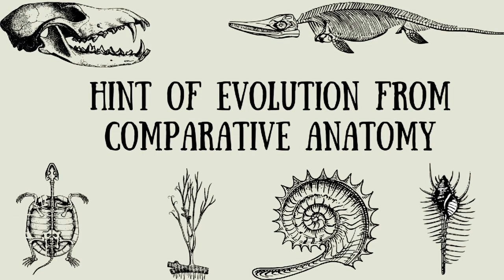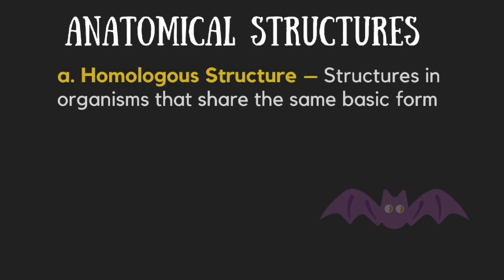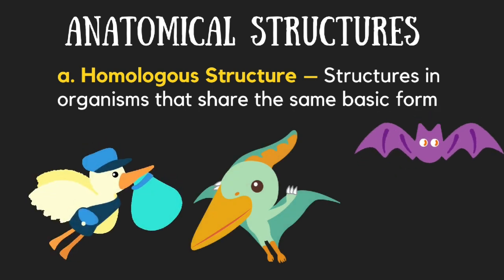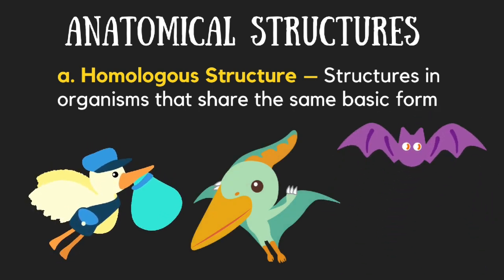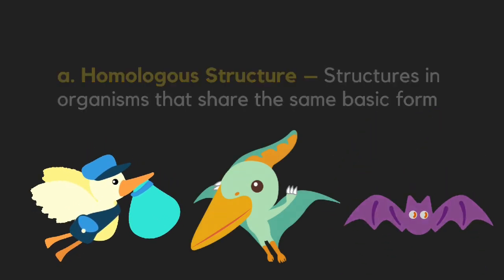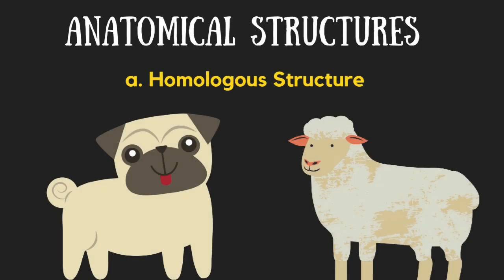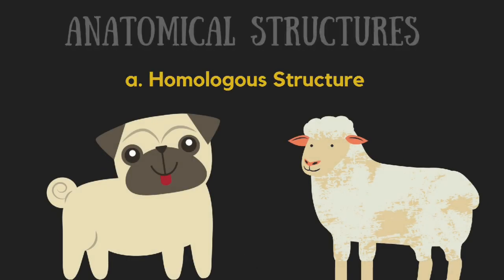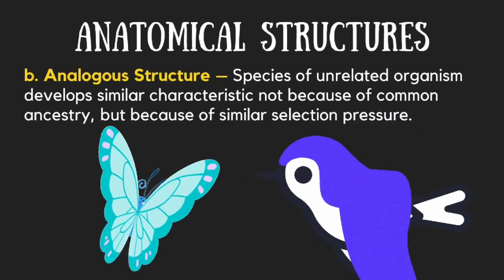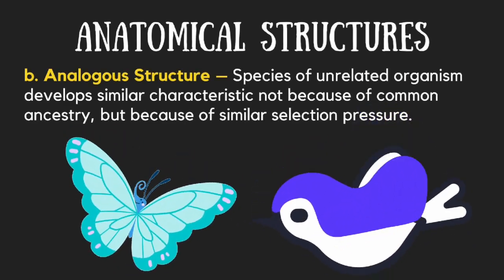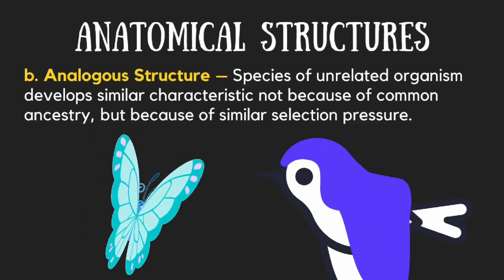Here are some hints of evolution from comparative anatomy. Structures from different species which have similar internal framework, positioning, and embryonic development are considered to be homologous. Homologous structures may perform different functions in species living in different environments, or may have the same origin but different function. Structures of unrelated species may evolve to look alike because the structure is adapted to similar functions. These are called analogous structures. Analogous structures have similar functions but different origins.